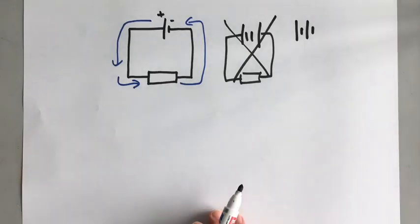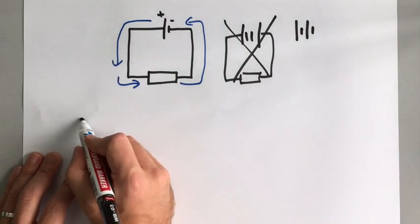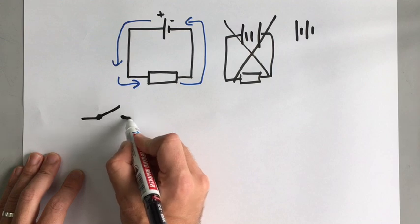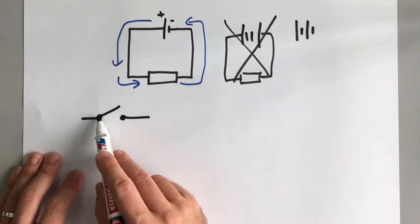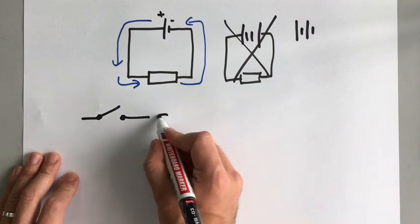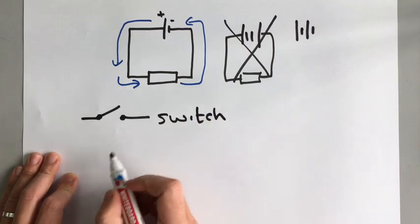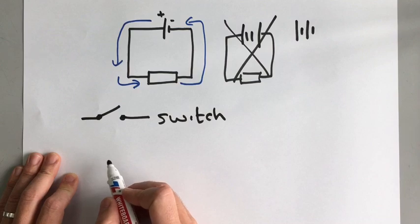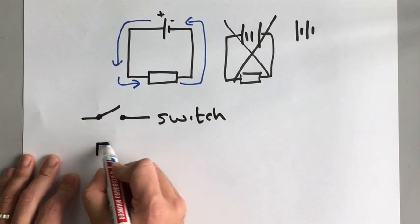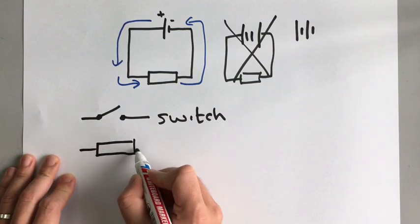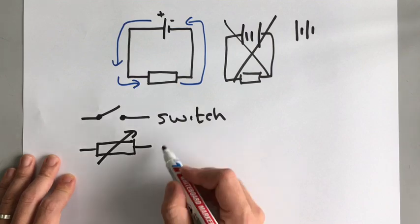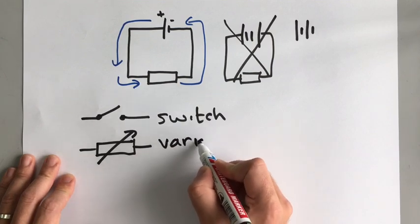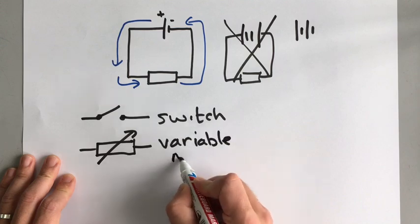The other circuit symbols you need to know: a switch, which you can draw like that. A switch opens the circuit to turn something off, or closes it to turn it on. You also need to know what a variable resistor is — a component where you can change the resistance. A variable resistor looks like a resistor with an arrow going across it, meaning you can change the resistance.